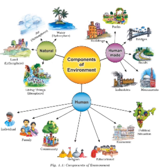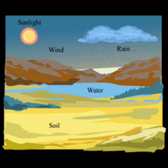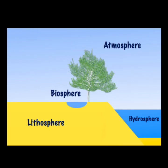Natural components of environment include water, air, land, and all living things such as plants and animals. The domain of water is called hydrosphere, the domain of air is called atmosphere, the domain of land is called lithosphere, and the domain of living things is called biosphere.